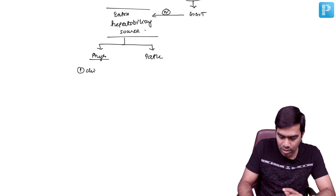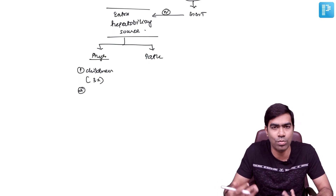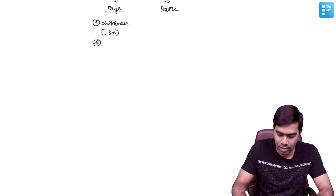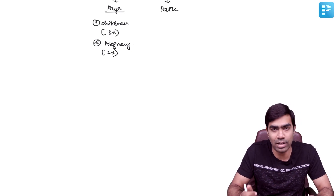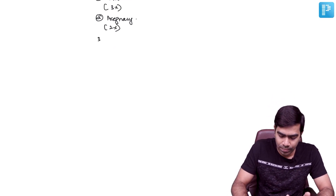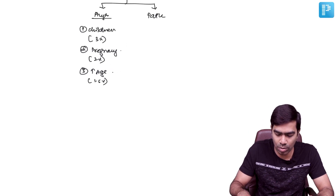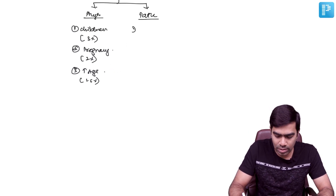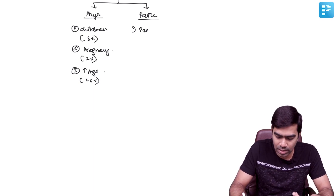Physiological rise can be seen in children, where alkaline phosphatase levels can be elevated up to three times the upper limit of normal due to bone growth and high osteoblastic activity. It can also be seen in pregnancy, especially in the late third trimester, with up to two times elevation due to placental alkaline phosphatase. In elderly patients, especially those over 65 to 70 years, up to 1.5 times elevation of alkaline phosphatase is quite common.